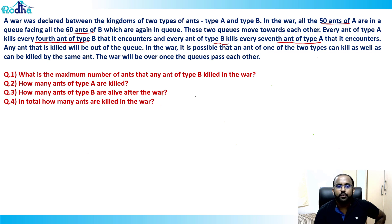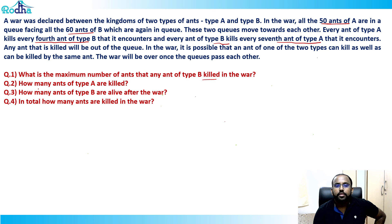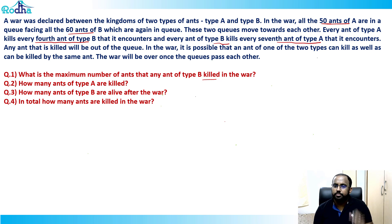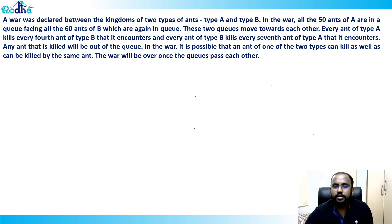The question asks: what is the maximum number of ants that any ant of type B killed in the war, and how many ants of type A are killed? To answer this kind of question, I need to solve the whole puzzle, so let's get into it.